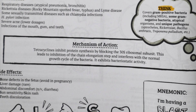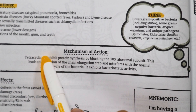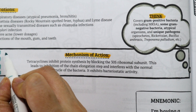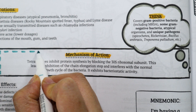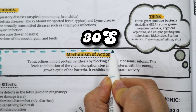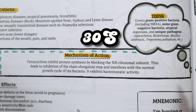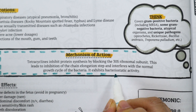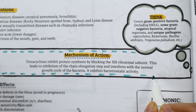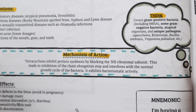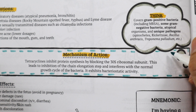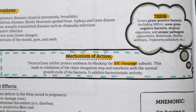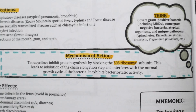Moving on to the mechanism of action. Tetracyclines penetrate bacterial cells and inhibit bacterial growth by interfering with protein synthesis through blocking the 30S ribosomal subunit. This leads to inhibition of the chain elongation step of protein synthesis and interferes with the normal growth cycle of the bacteria. Tetracycline antibiotics exhibit bacteriostatic activity.